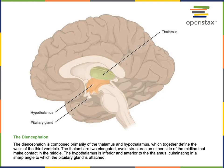Deep to the cerebrum is a region of the brain known as the diencephalon. The diencephalon includes the thalamus and the hypothalamus. A major function of the thalamus is to relay sensory information to the cerebral cortex. A major function of the hypothalamus is to control the autonomic nervous system and the endocrine system. The pituitary gland is located just inferior to the hypothalamus, and the hypothalamus will control the secretion of hormones from the pituitary gland.